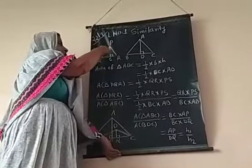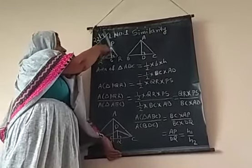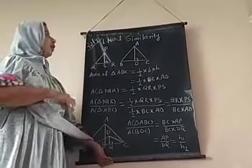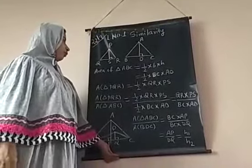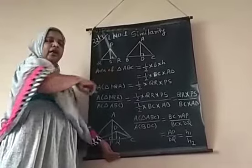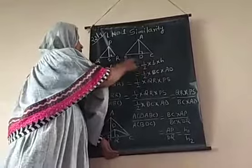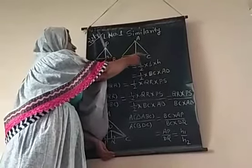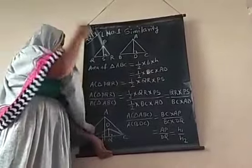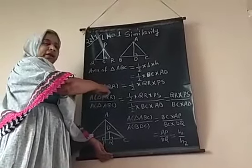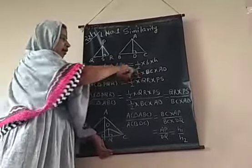In triangle PQR, PS is the height drawn from vertex P — that is, PS is perpendicular to QR. And in triangle ABC, AD is perpendicular to side BC. Therefore, area of triangle ABC equals half multiplied by base BC multiplied by height AD. Similarly, area of triangle PQR equals half multiplied by QR multiplied by PS. QR is the base and PS is the height.